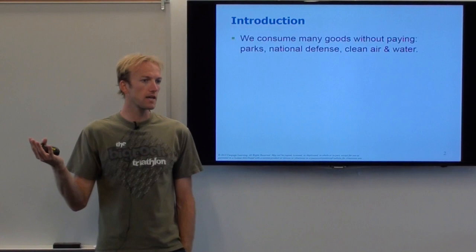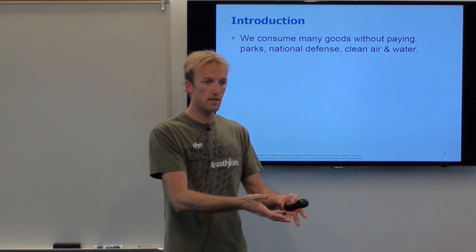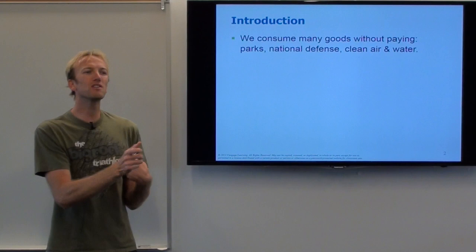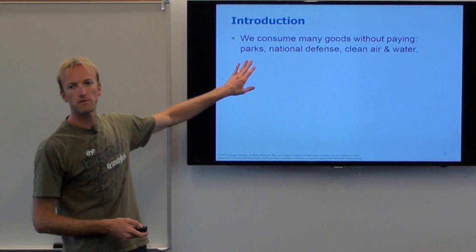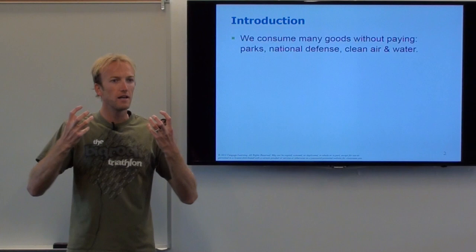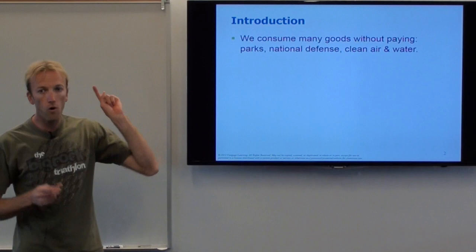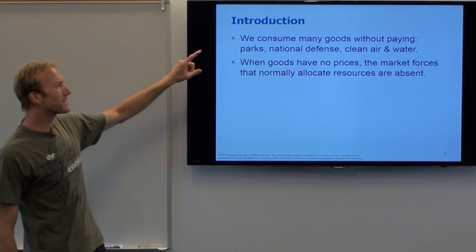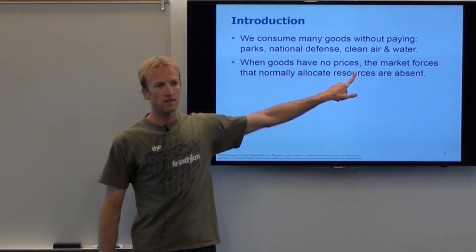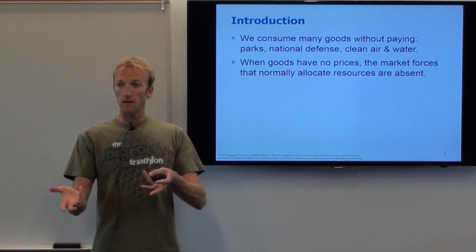You go to the seller, you exchange some quantity of money, then you take the good home and consume it. But now we're getting into a whole different class of goods that we don't have to pay for — parks, national defense. You probably never even thought about being protected as a good you're consuming. We pay for that through our taxes, of course. But these are a whole new group of goods with no price.